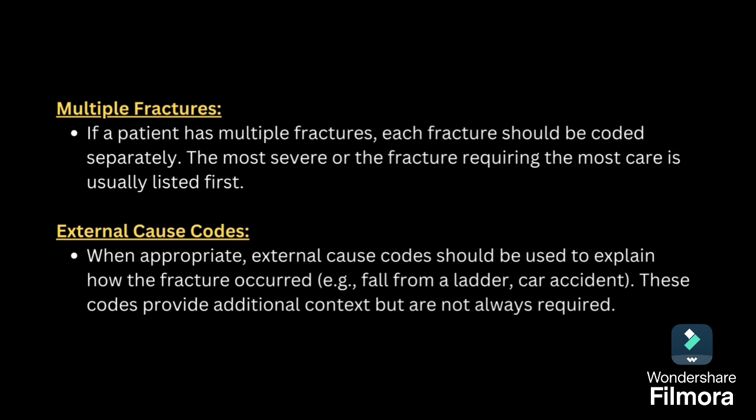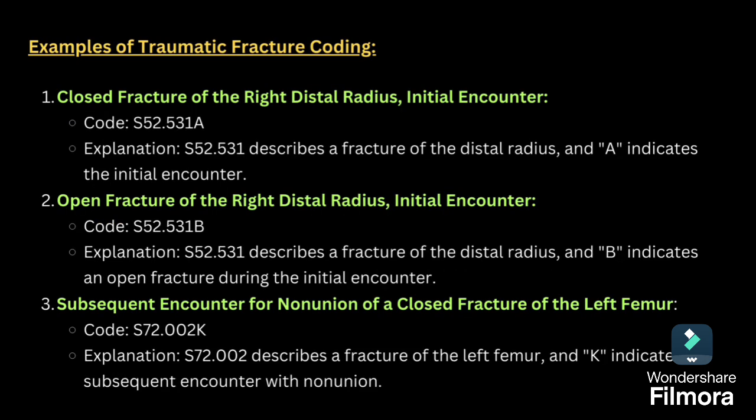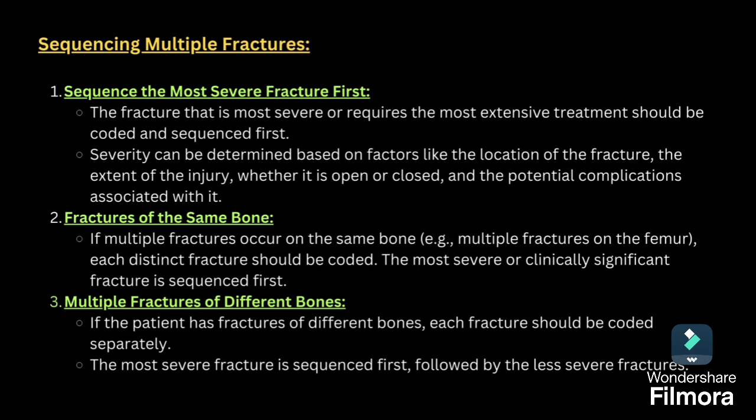Write the notes and keep them so that it will be really helpful for you to practice. Examples of traumatic fractures include a closed fracture of the right distal radius for an initial encounter. A few examples are given showing how the seventh character is assigned for initial encounter, subsequent encounter, and so on. Read the question properly and check those codes in the book for a proper understanding.